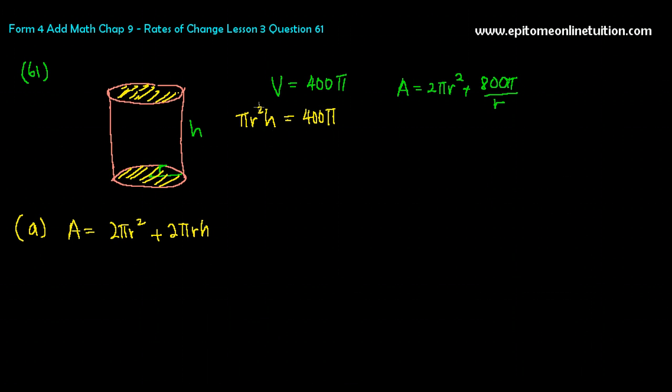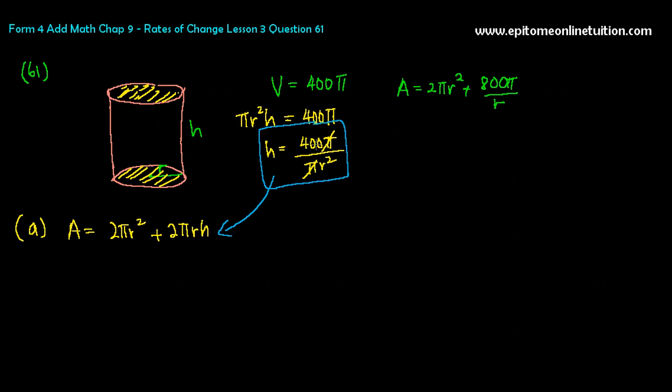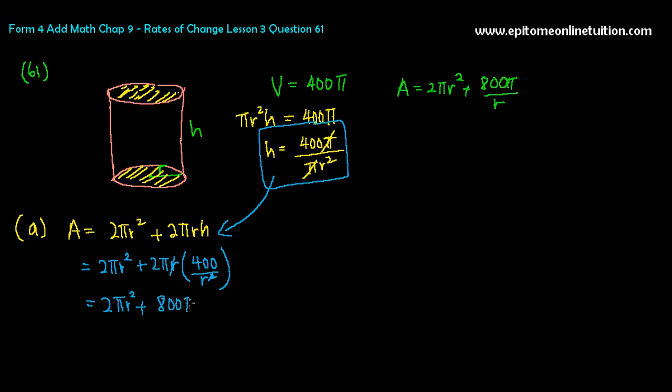Can you see there's an h here? You need to make h the subject. That is 400π over πr². So cut off the π, h is 400 over r². Now you can substitute this into the h here. That's how you get rid of the h. If you substitute, you would have gotten rid of the h and in place you have r instead, which will give you this answer. So 2πr² plus 2πr times h is 400 over r². Cut off the r and the r. That's 2πr² plus 2 times 400 is 800π on top and there's an r at the bottom. So over r. There you go. Shown.